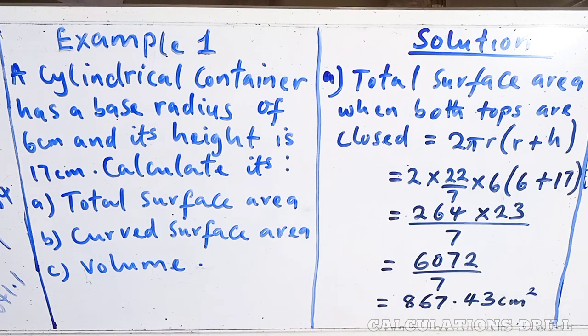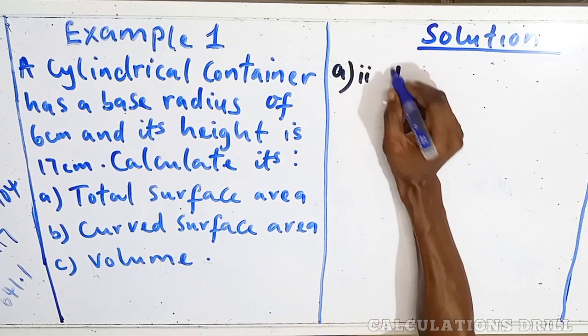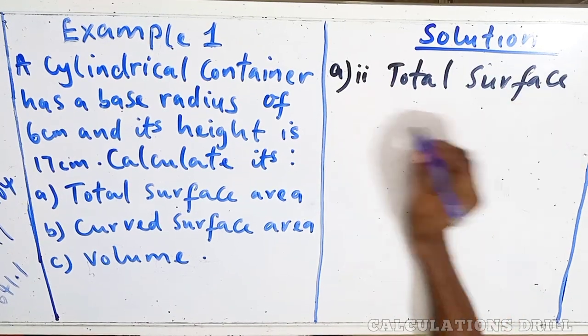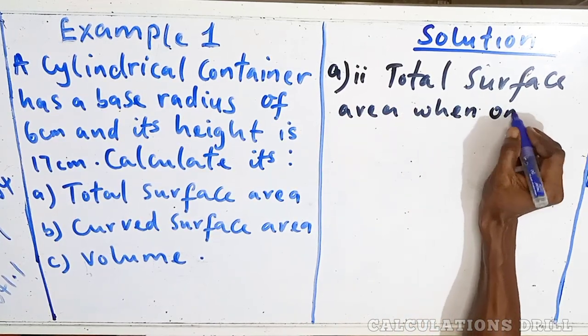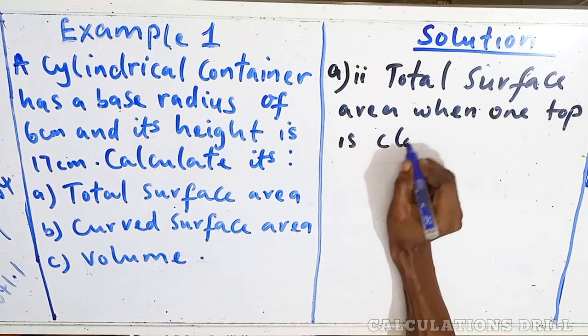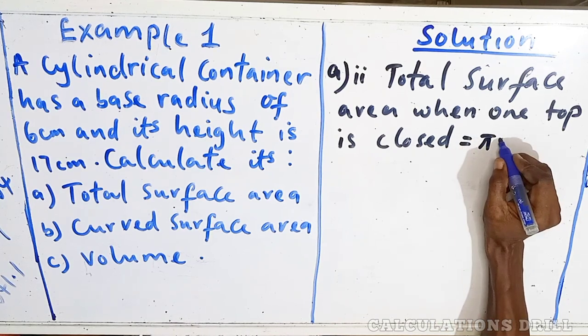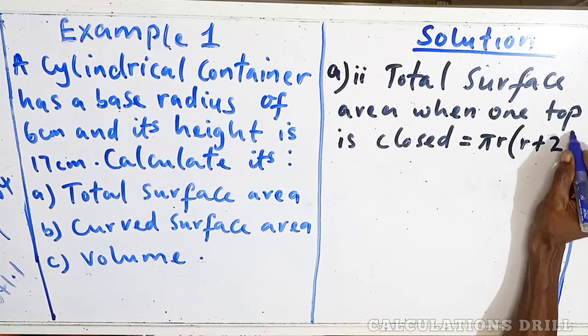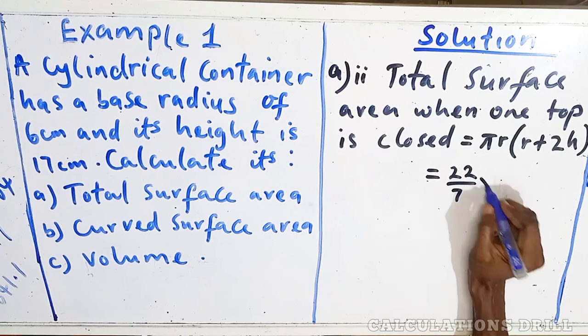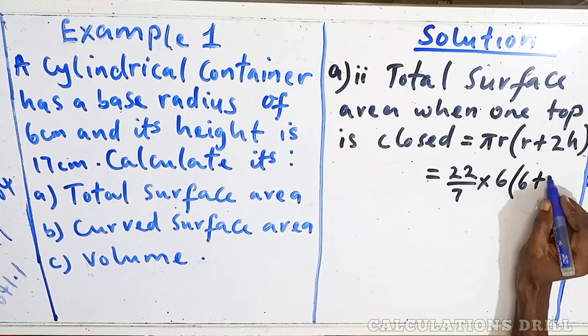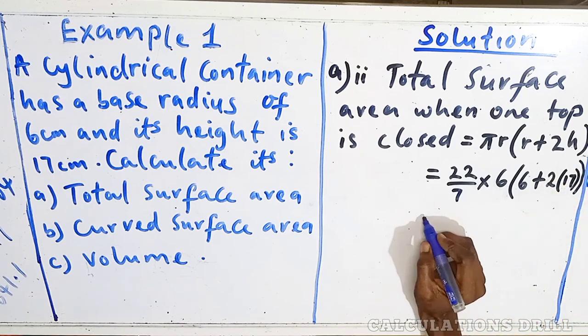The next one, we're also going to now calculate the total surface area when one top is closed. Remember the formula? Equals to πr(r + 2h). Let's take note of the formula. So, we're going to 22/7 times 6, 6 into bracket 6 plus 2 multiplied by the height, which is 17.